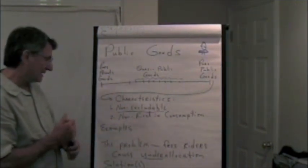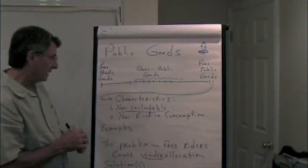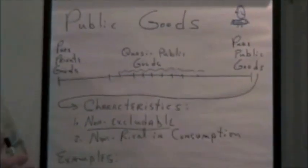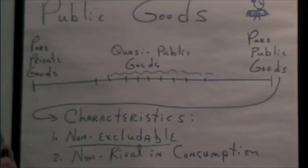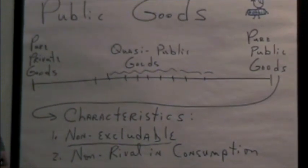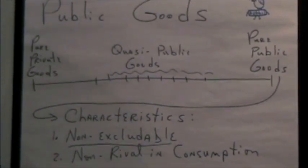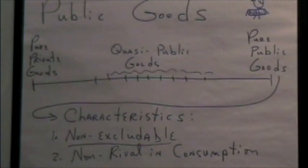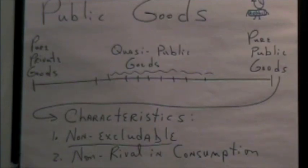An example of a pure public good would be something like flood control or maybe national defense, street lights, and lighthouses. The characteristic of a pure public good, for instance lighthouses.